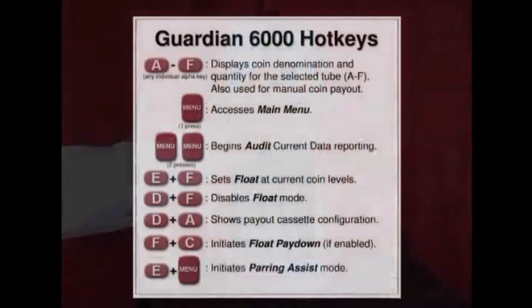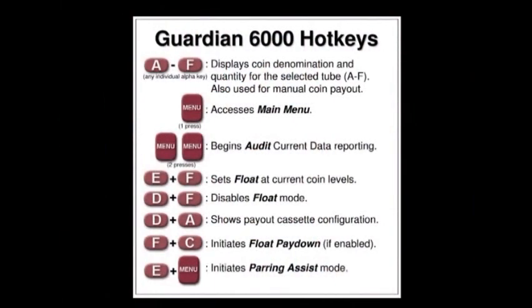For instance, pressing E and F enables float. Pressing D and F together disables float. If you press the D and A button together, it will show you what your cassette configuration is. And by pressing F and C together, it will enable the float pay down mode if that option is enabled.